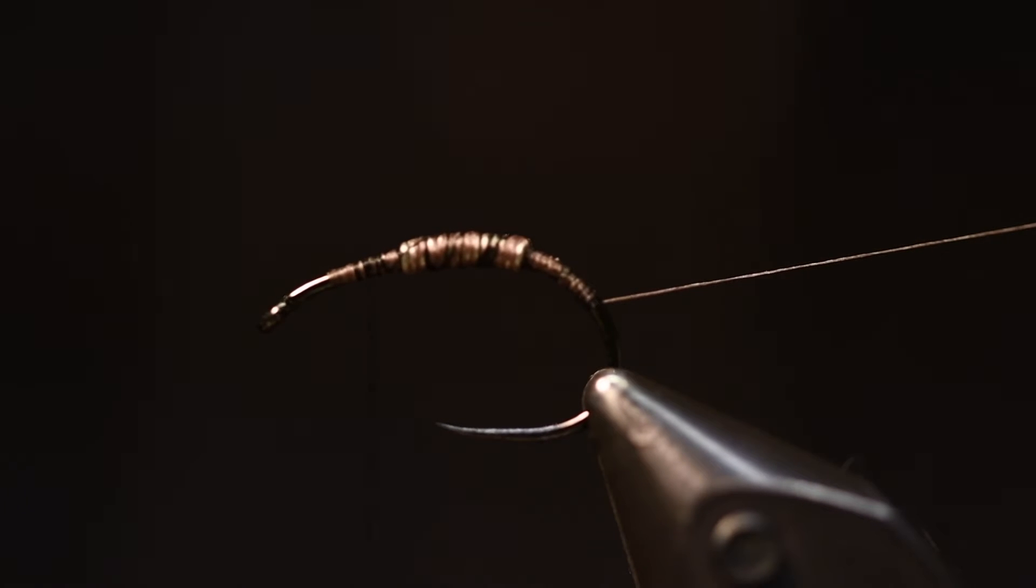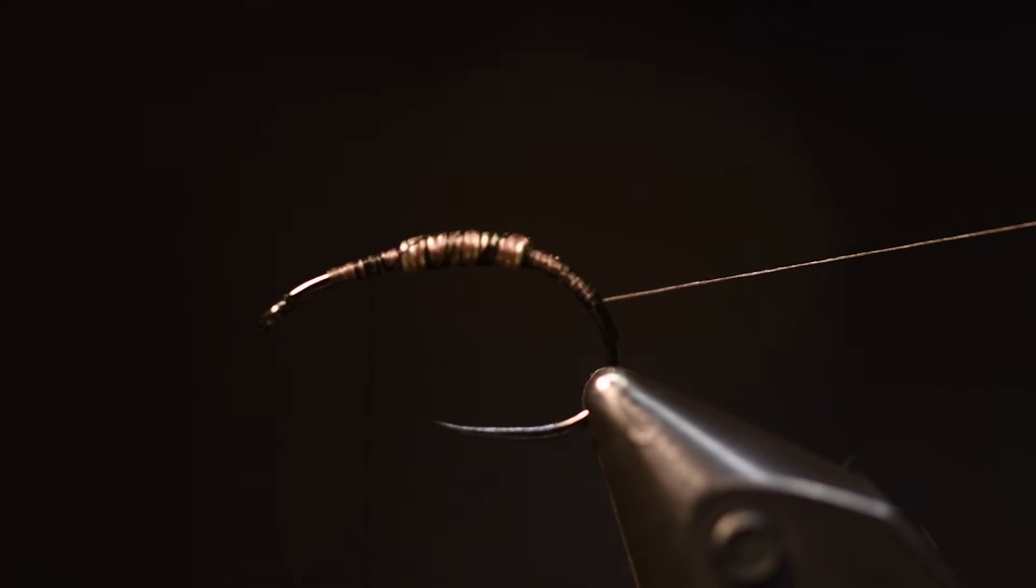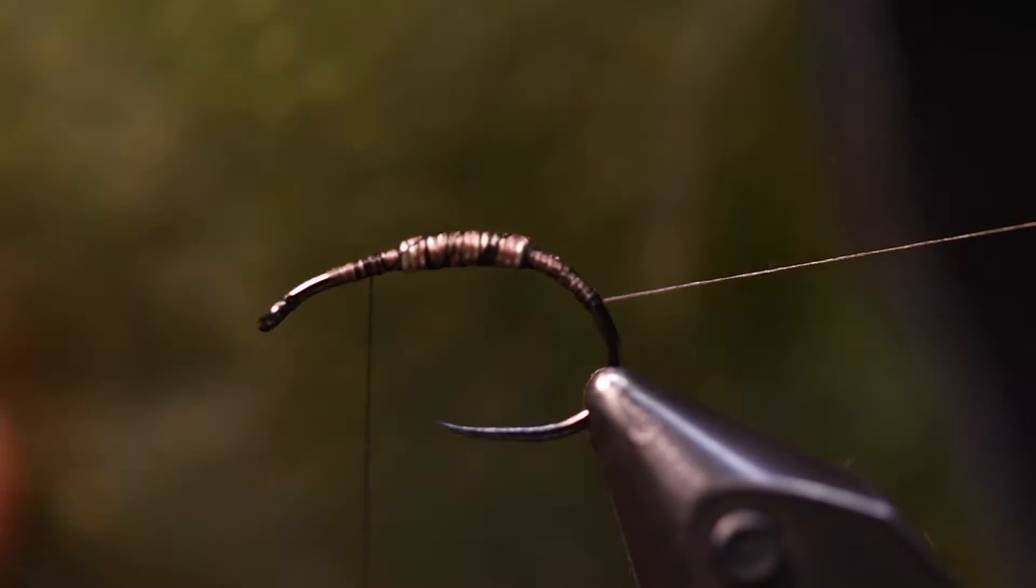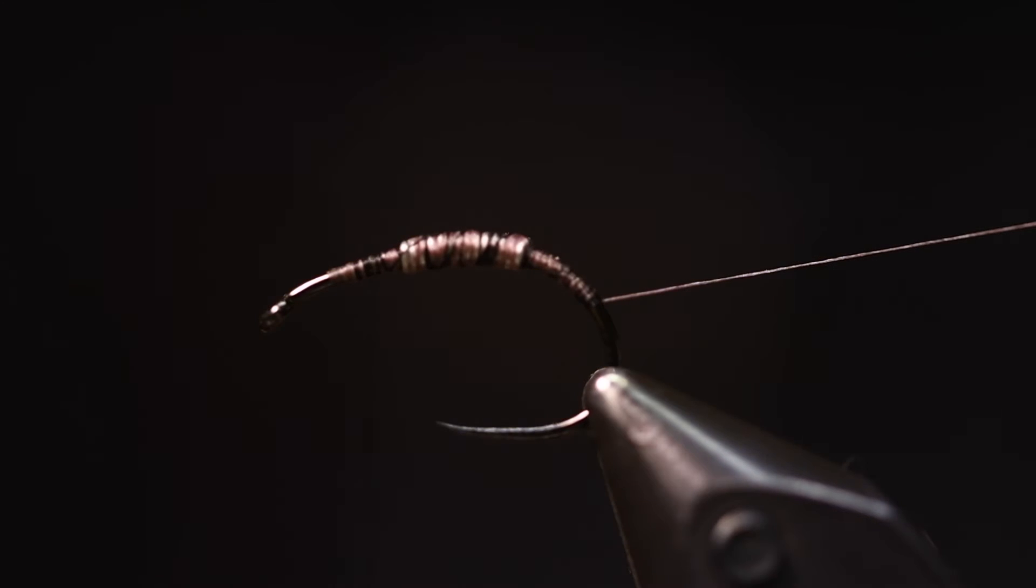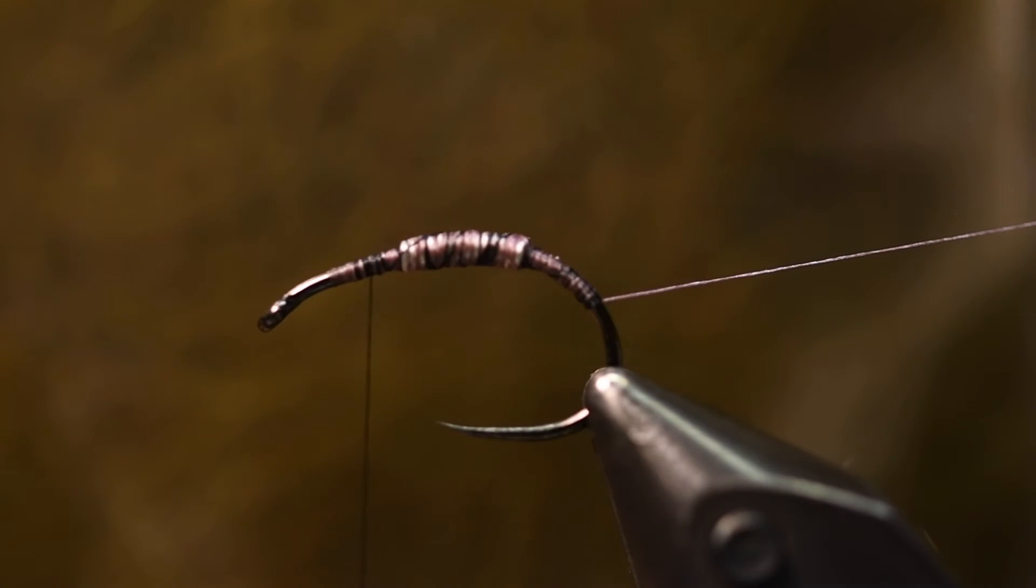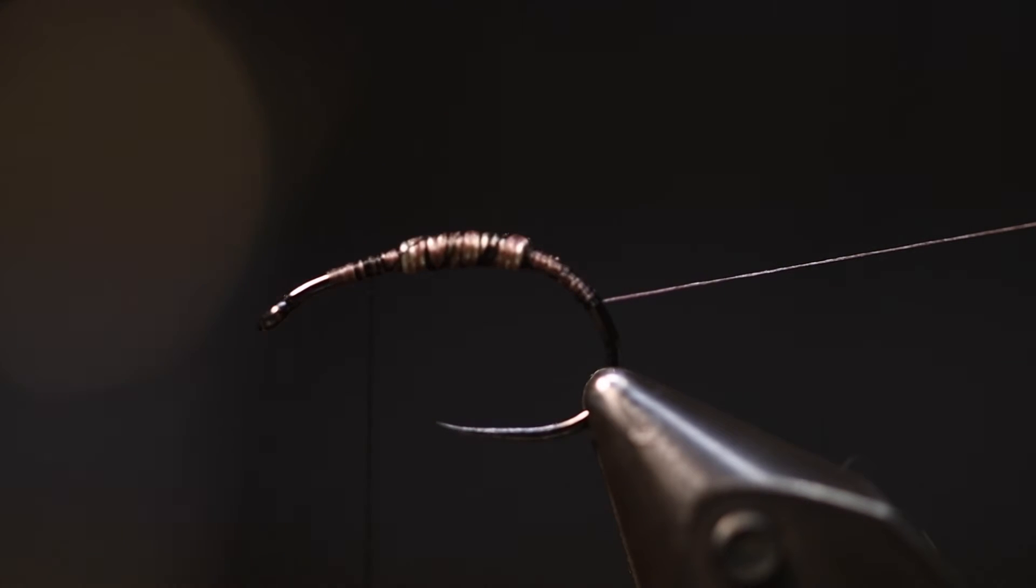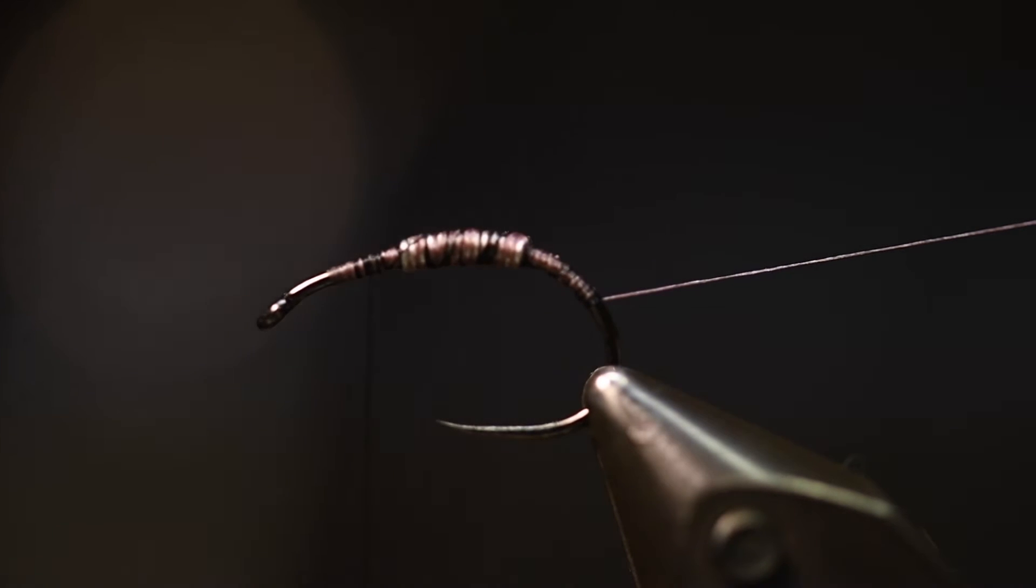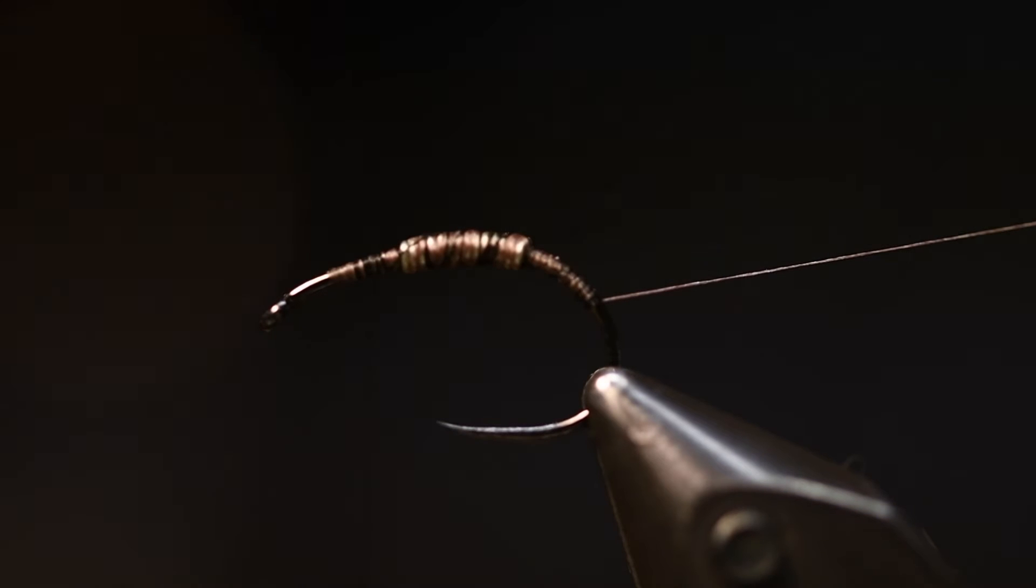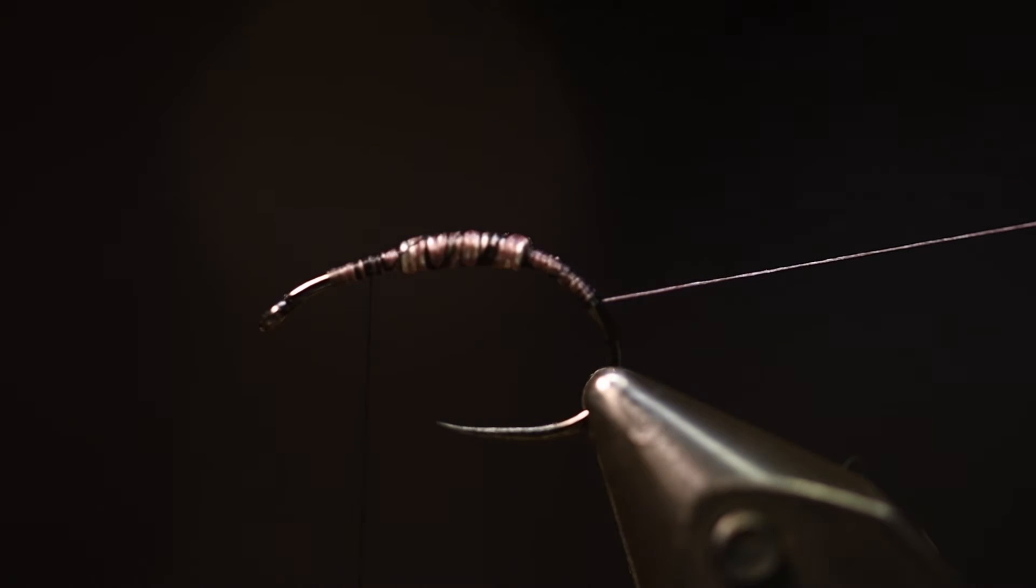Now I will start with mixing two kinds of dubbing. This is Ice Dub Holo Olive, really nice with a little holographic flash effect, not as much as many of the other Ice Dubs. And this is the snowshoe rabbit foot dubbing, tannish olive. I will mix those together and you will have a really nice colorization of the dubbing.